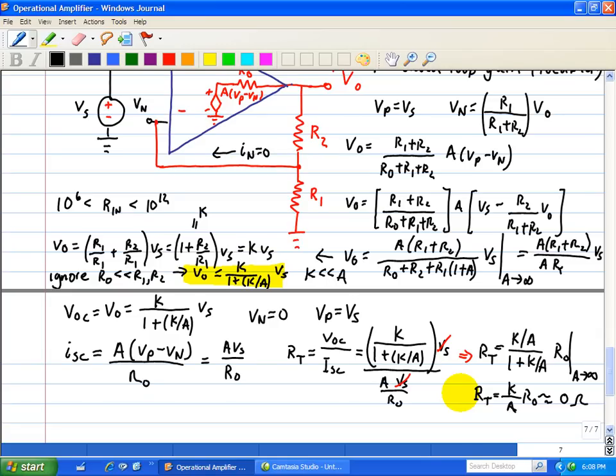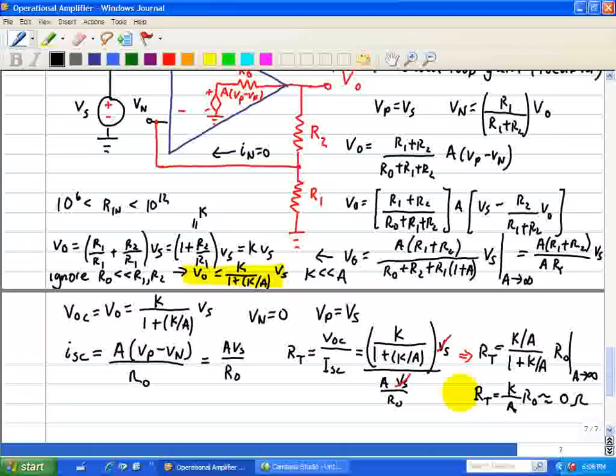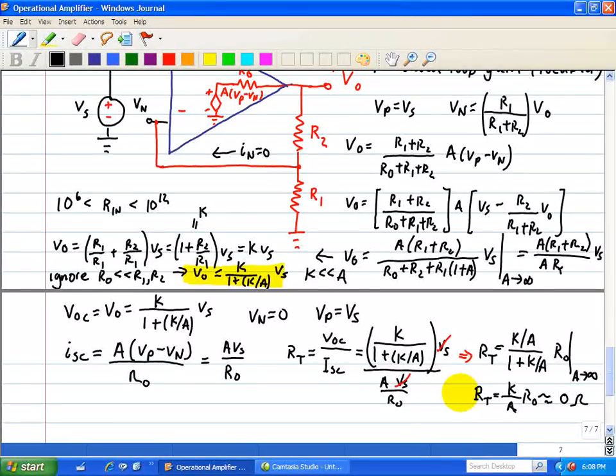Feedback must be present for the device to operate in the linear mode. The most dramatic feature of the ideal model is the assumption of infinite gain.